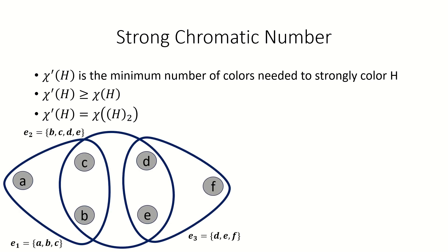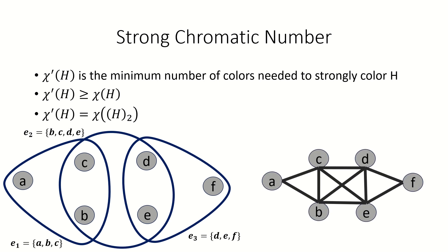As an example, if this is our hypergraph, to find its strong chromatic number, we only need to find the chromatic number of its two-section.